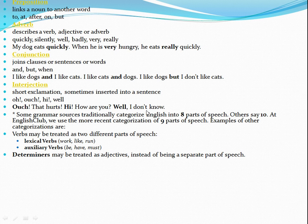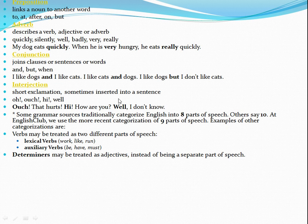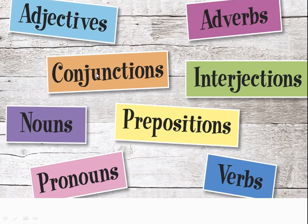Some grammar sources traditionally categorize English into eight parts of speech, others say there are ten. At English Club, the more recent categorization of nine parts of speech is used. Examples of other categorizations: verbs may be treated as two different parts — lexical verbs like work, like, run, and auxiliary verbs like be, have, must. Determiners may be treated as adjectives instead of being a separate part of speech.